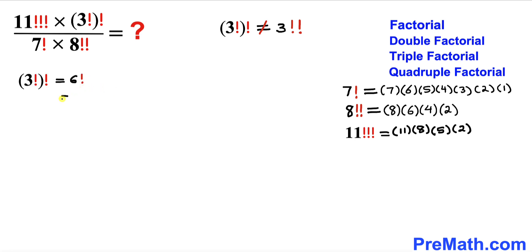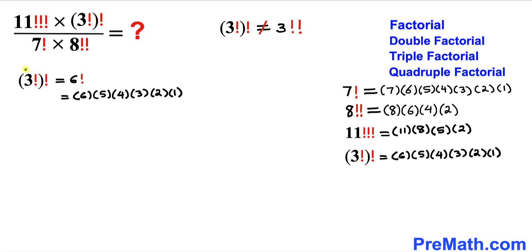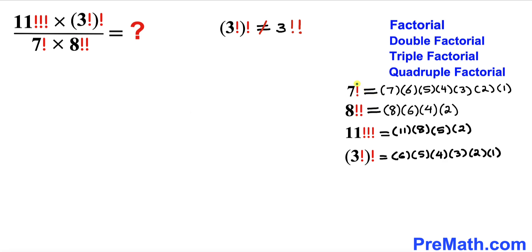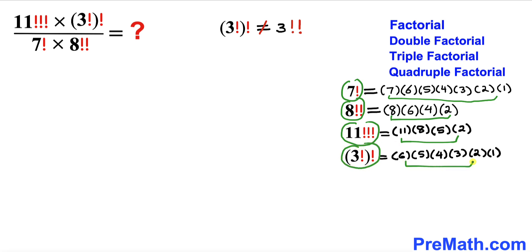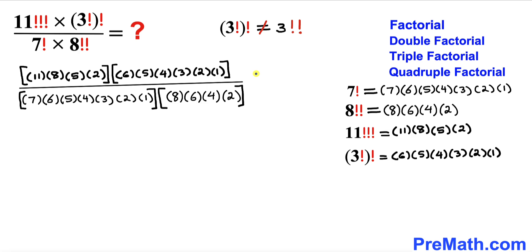6 factorial is 6 times 5 times 4 times 3 times 2 times 1, so our nested factorial (3!)! expands to this full string. We have also identified 7 factorial, 8 double factorial, 11 triple factorial, and the nested factorial as expanded products, and now we plug them all into the original expression.